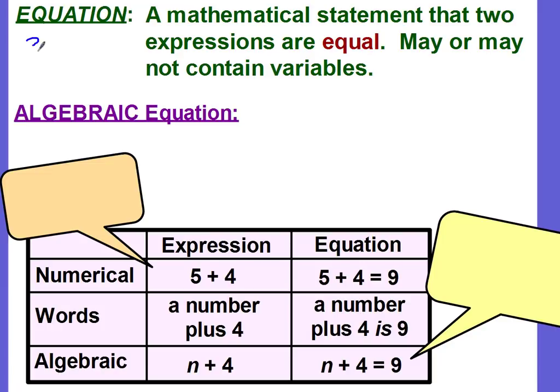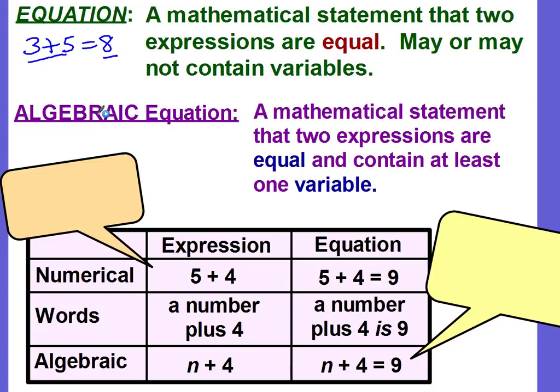For example, 3 plus 5 equals 8. This is an equation. This is saying that the expression 3 plus 5 is equal to 8. An algebraic expression is the same thing, except it contains at least one variable. So this could be 3 plus x equals 8. This would be an algebraic expression.